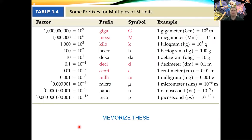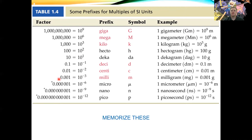Here is the list of prefixes you need to memorize — they are all multiples of 10. For example, 'k' stands for kilo, which is 1000 or 10³, so one kilogram is 1000 grams. This notation of 10 to some power: 10³ means a one with three zeros, 10¹ means 10, and 10⁻³ means 0.001.